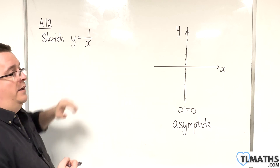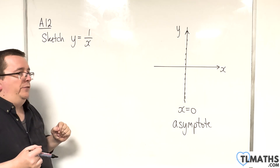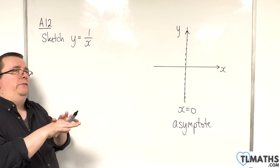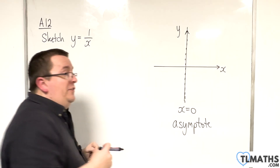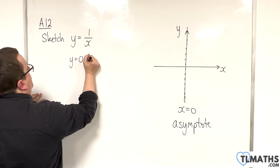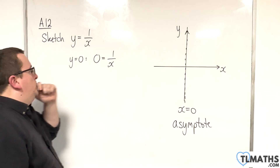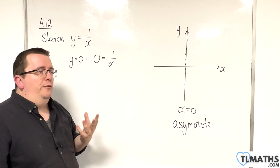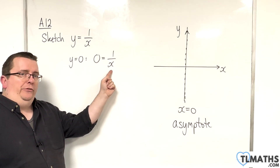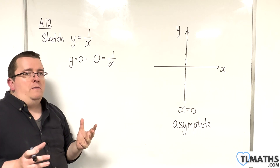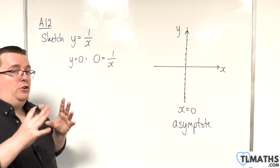This graph also has another asymptote, and this one is horizontal. If we want to find where the graph crosses the x-axis, we plug in y equals 0, giving us 0 equals 1 over x. Is there a value of x for which 1 over x equals 0? No — it doesn't matter how large x becomes. If x is a billion, 1 over a billion is very close to 0 but not equal to 0. So the graph definitely doesn't cross the x-axis.